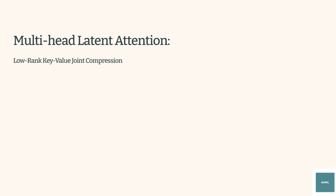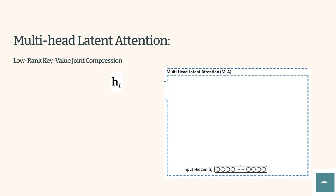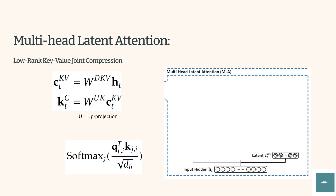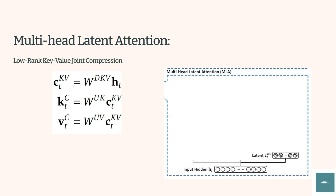To address the memory bottleneck, DeepSeek introduces low-rank KV joint compression. HT is the original token representation. WDKV is a down-projection matrix that reduces the dimensionality. Through this equation, key and value representations are compressed into C, a low-dimensional latent representation that stores only the essential information, reducing memory usage. During inference, we reconstruct K from C to the original size to compute attention scores, and reconstruct V to compute the weighted values. During K and V compression, some details are lost, but with proper training, the matrices retain essential data, discard redundancy, and reduce computational costs without impacting performance.